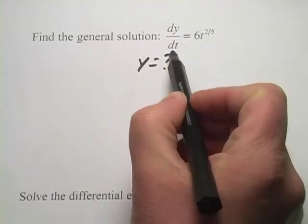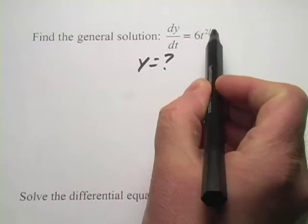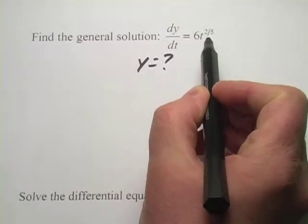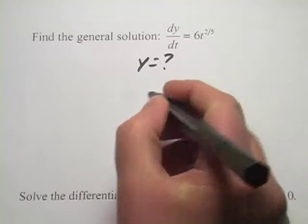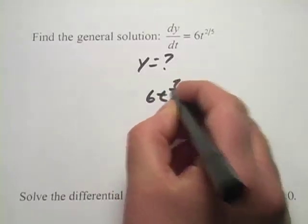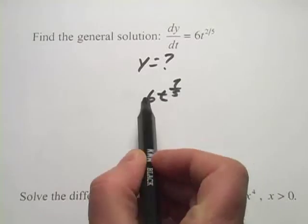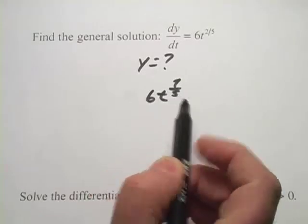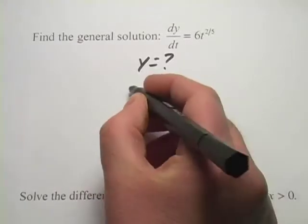So we have dy/dt equals 6t to the two-fifths. The first step is to increase that power by one. So I'm going to add five-fifths to that power. So that becomes 6t to the seven-fifths. And then I multiply the constant out front by the reciprocal here. So five-sevenths.